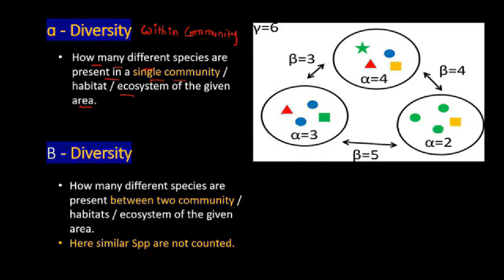Consider community 1, community 2, and community 3. In community 1, there are 3 different types of species: a square, a circle, and a triangle — so alpha diversity is 3. In community 2, there are 4 different types of species, so alpha diversity is 4. In community 3, there are 3 different types of species, so alpha diversity is 3. Alpha diversity is measured within a single community.